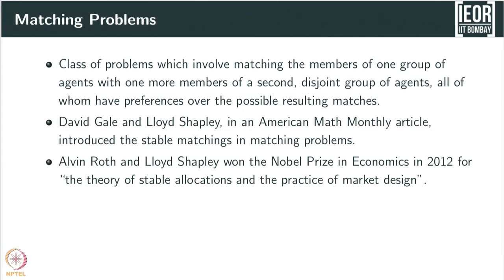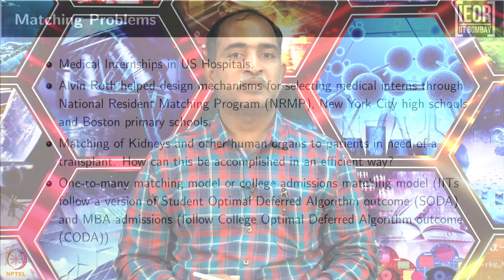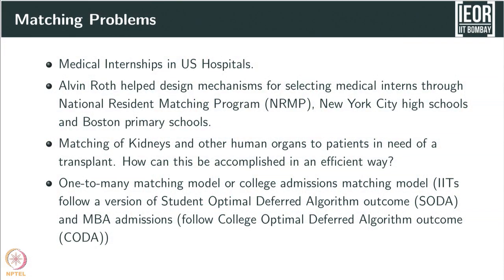Some examples include medical internships: once students graduate, they need to do internships in hospitals. Students have preferences over hospitals, and similarly hospitals have preferences over students. Another example involves patients who require organ donation and people who would like to donate organs — you need to find a match between them.